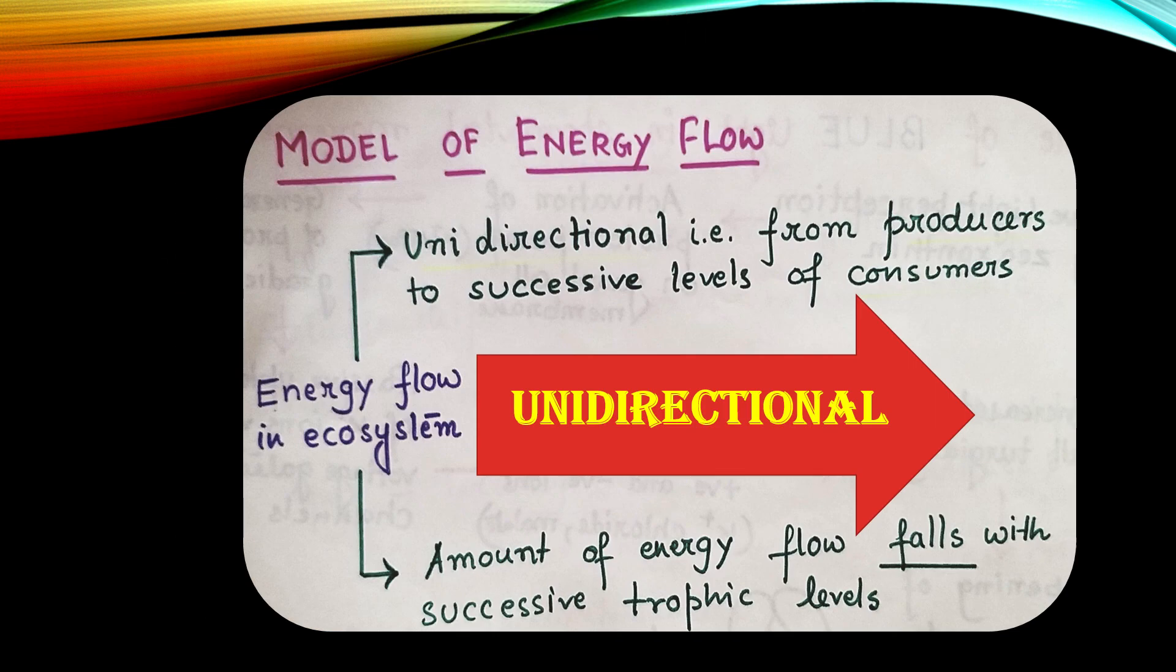Next is the model of energy flow. Energy flows in an ecosystem in an unidirectional manner. It is unidirectional, that is it is flowing from the producer to successive levels of consumer.